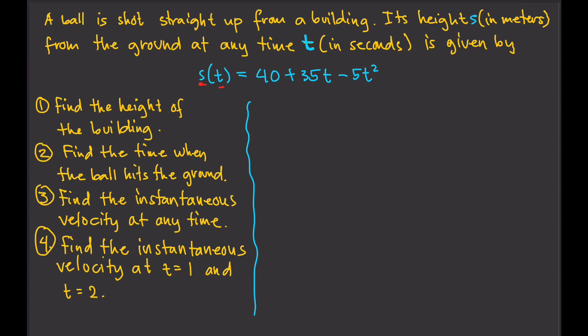Question number one: find the height of the building. s is the height of the ball from the ground at any time. So when time is equal to zero, the ball is exactly at the top of the building, because that is where it is being shot straight up. So at t equals zero, the ball is at the top of the building, and that corresponds to the height of the building.